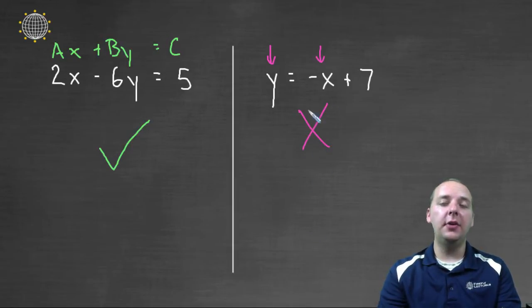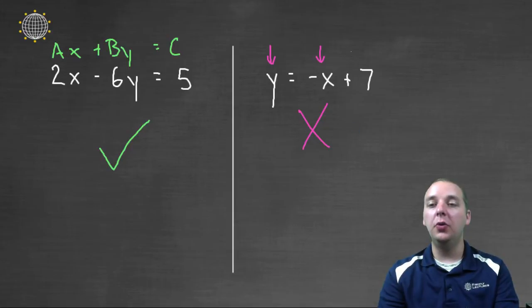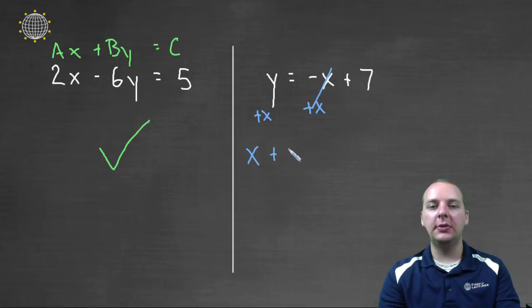Now even if an equation is not written in standard form, you can actually write it in standard form by moving some terms around. So for this one, if we didn't give up on it, we could probably add X to both sides. And once these X's cancel, then you'll get X plus Y equals seven.